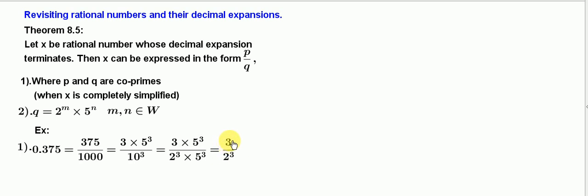Observe here, 3 and 2³, that is 8. HCF of 3 and 8 is equal to 1. Therefore, these two are coprime numbers.